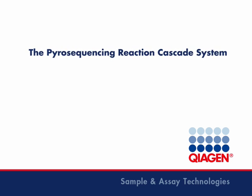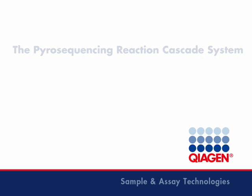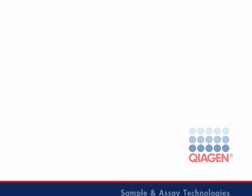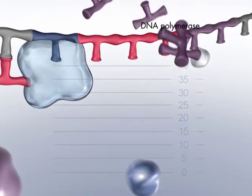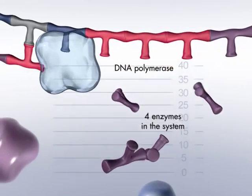Pyro's sequencing technology capitalizes on elegant chemistry to deliver real-time quantitative sequence data. Four enzymes convert the synthesis of a DNA molecule into a pattern of light signals.